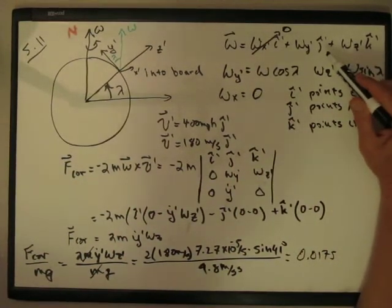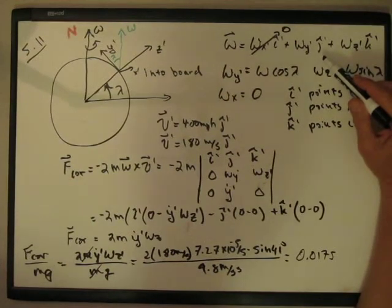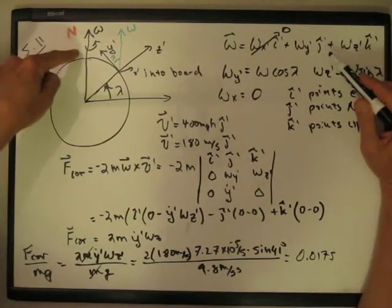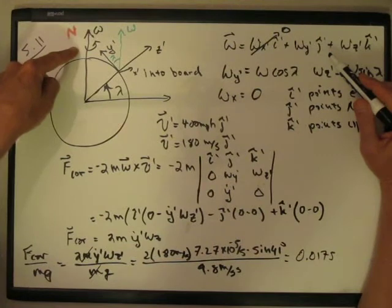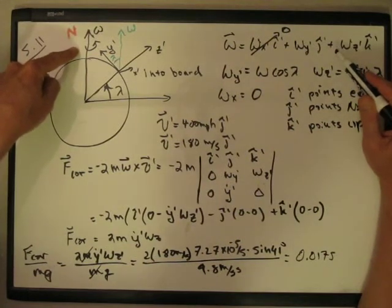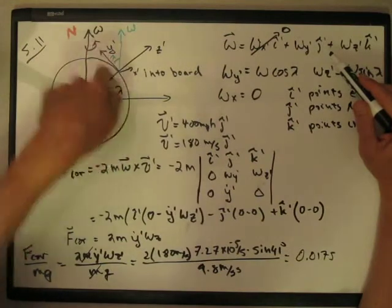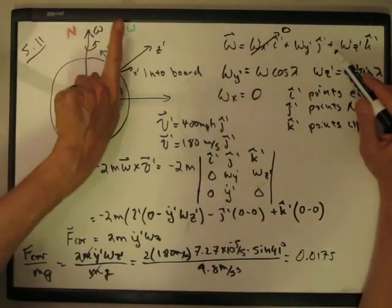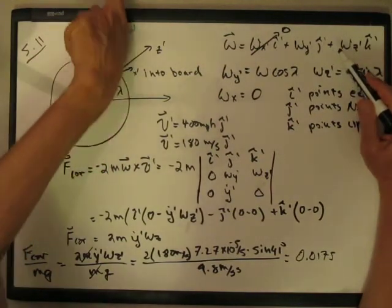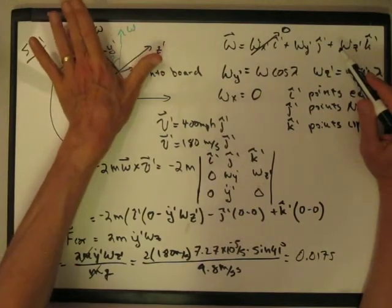And so the first thing we do is write this omega prime, omega, the rotation, the angular velocity of the earth, in the prime frame. And so it's got a z component and a y component, but no x component, right? The omega just points this way, and that's in the z prime y prime plane.